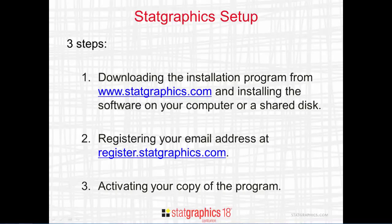To set up StatGraphics 18 for use, you need to go through three steps. In step one, you download the installation program from www.statgraphics.com and install the software on your computer, or in the case of a network installation, on a shared disk. In step two, you register your email address at www.statgraphics.com. And in step three, you activate your copy of the program. This video will describe what's necessary to accomplish step one. Additional videos deal with steps two and three.